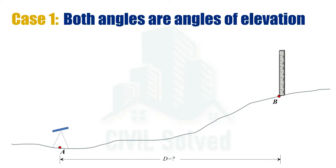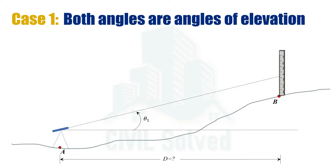The axis of the instrument is shown. Since both angles of target are angles of elevation, theta 1 is the first angle of elevation and theta 2 is the second. In this case, theta 2 is greater than theta 1. The difference of the staff readings at both angles is named as s, which is the staff intercept. The vertical distance from the axis of the instrument to the point where the staff reading is taken at theta 1 is v.